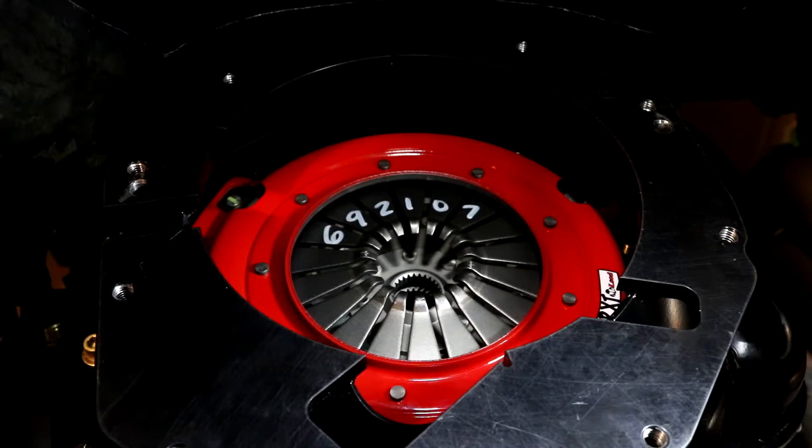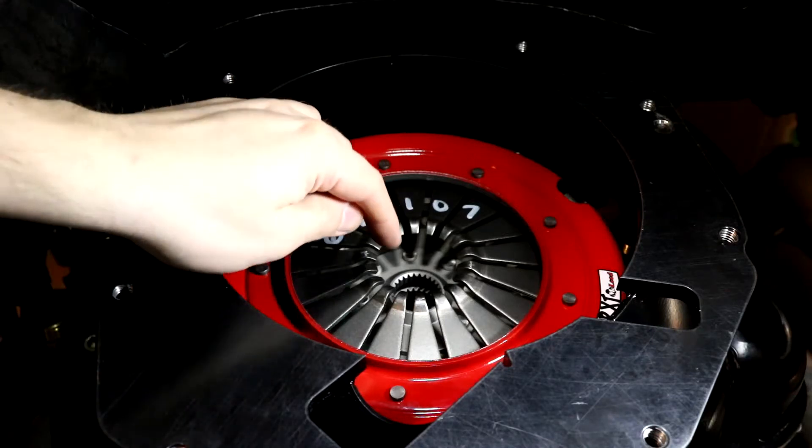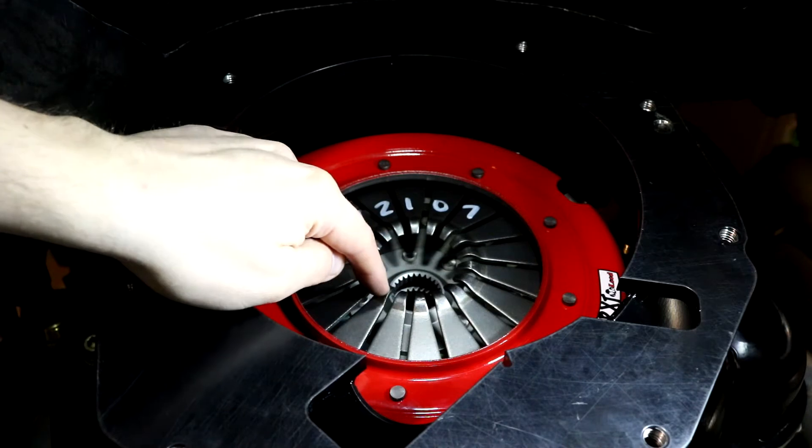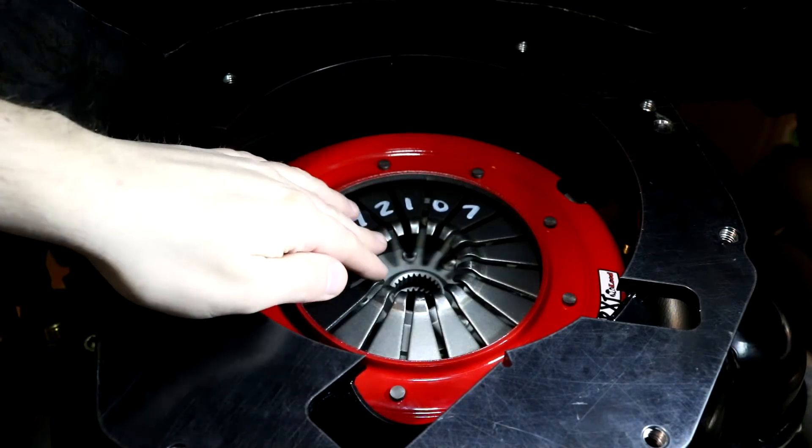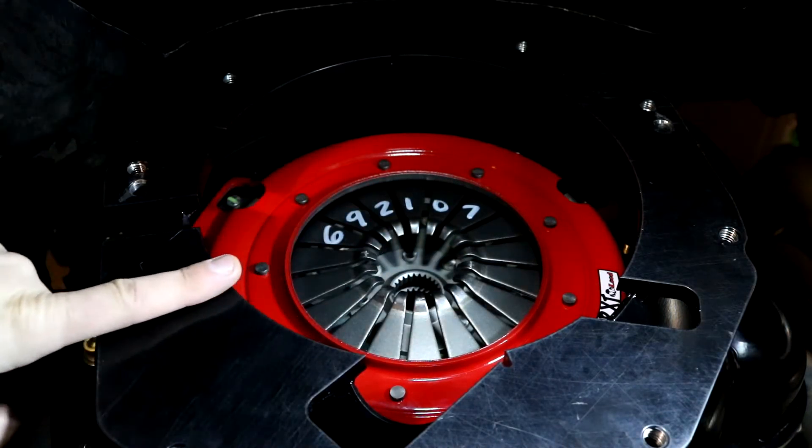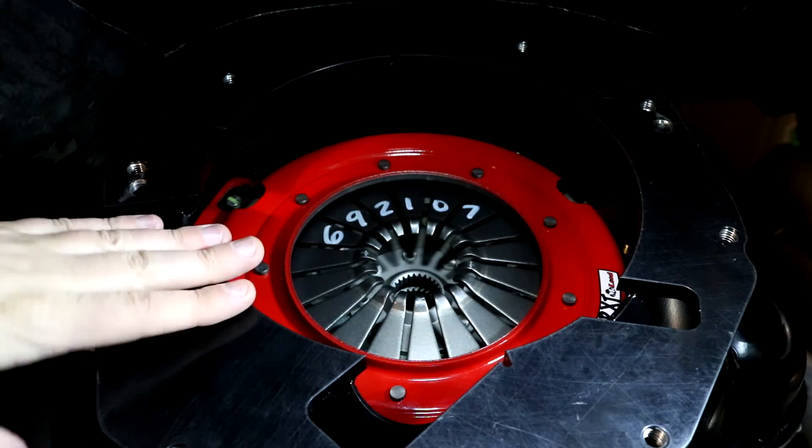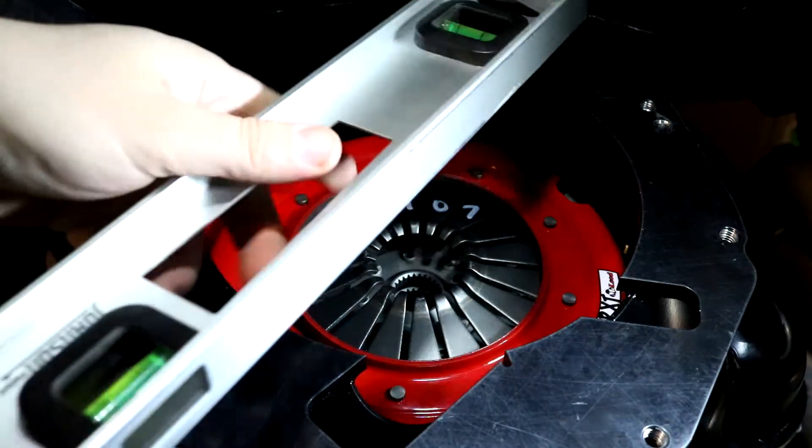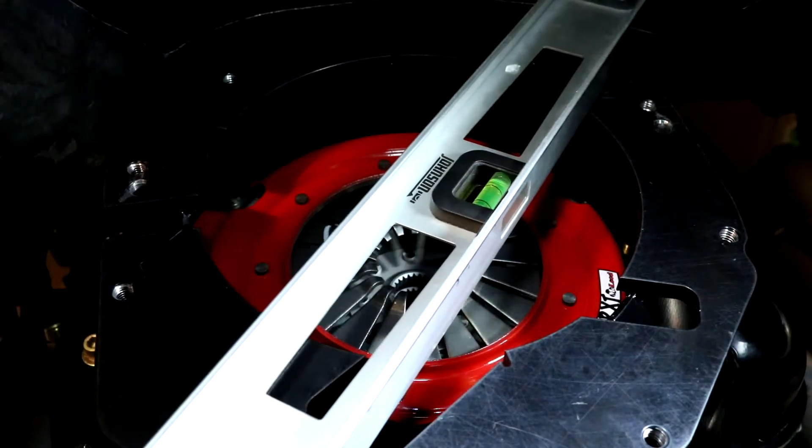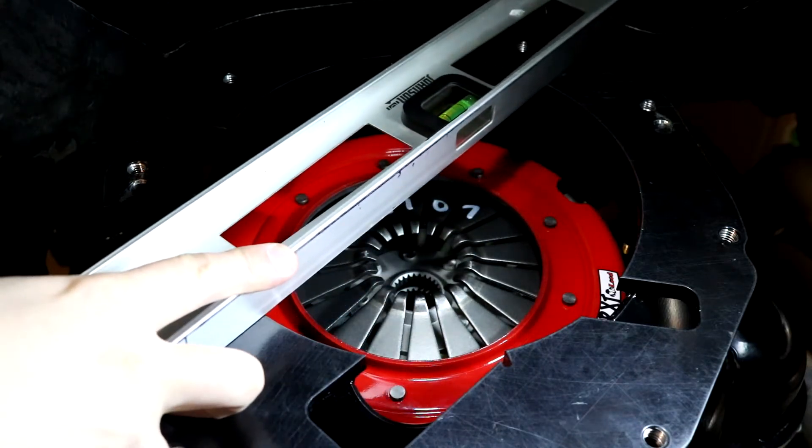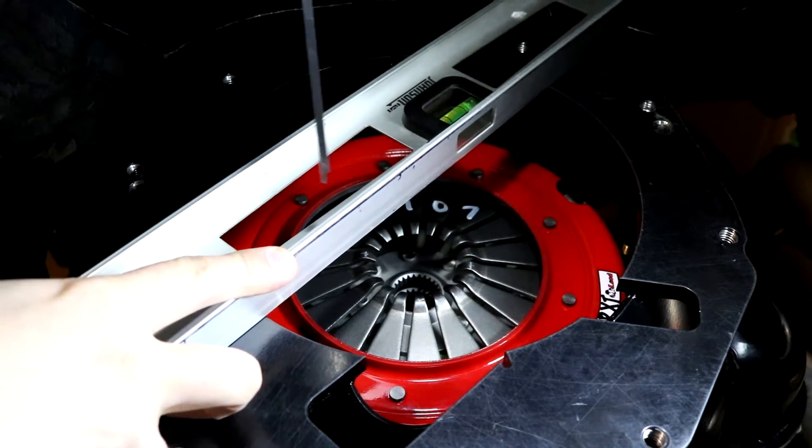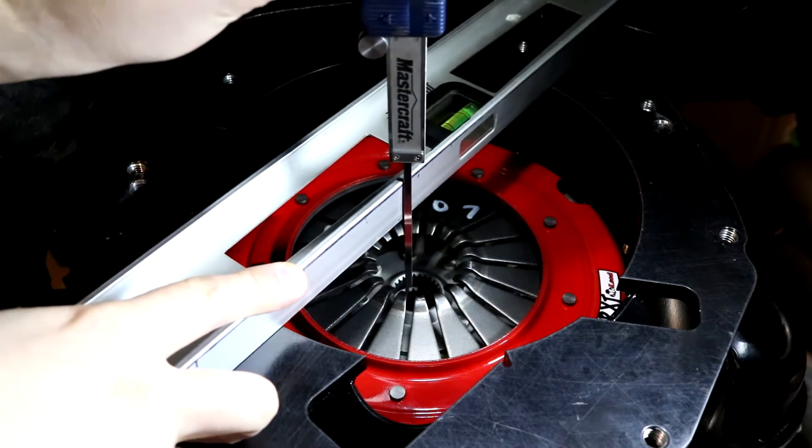To measure for the installation height of the release bearing, we need to find the distance from the clutch fingers here that touch the bearing itself to the face of the transmission or bell housing here. So we need to get a straight edge which we'll throw it across like so.